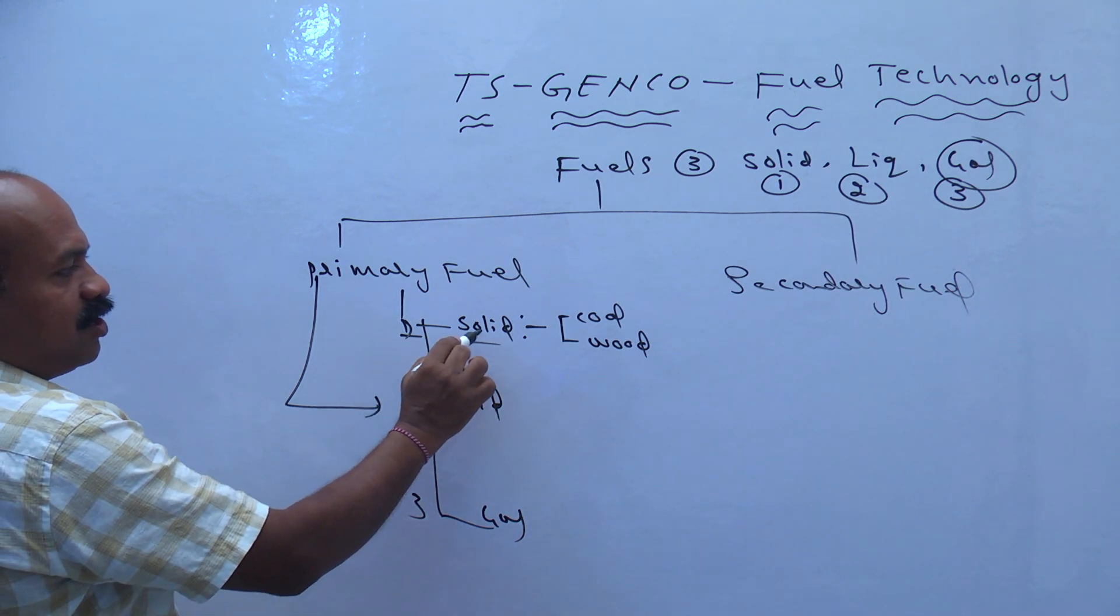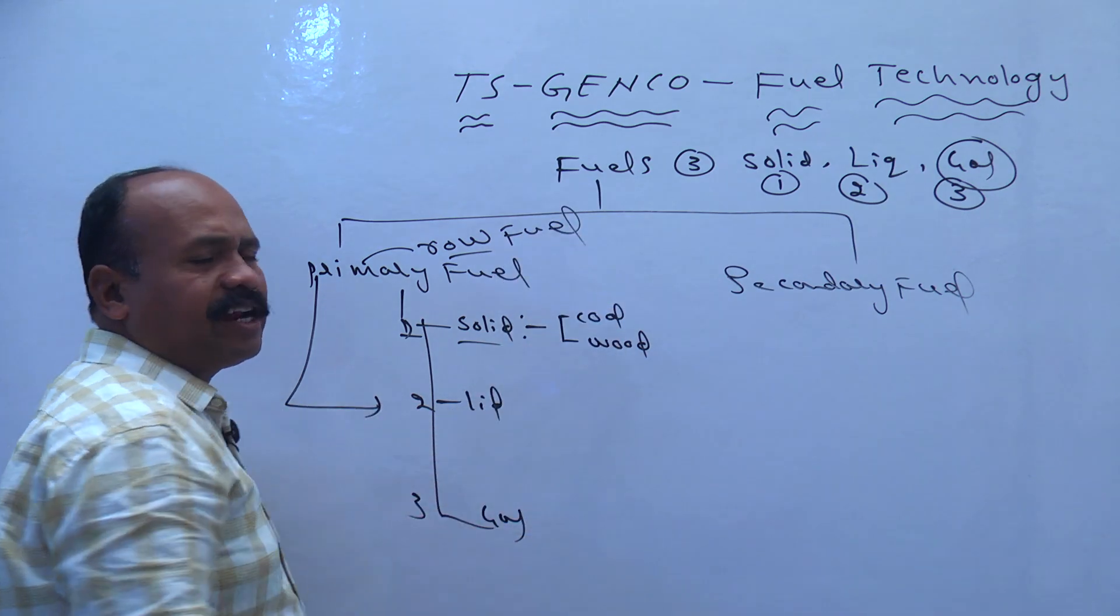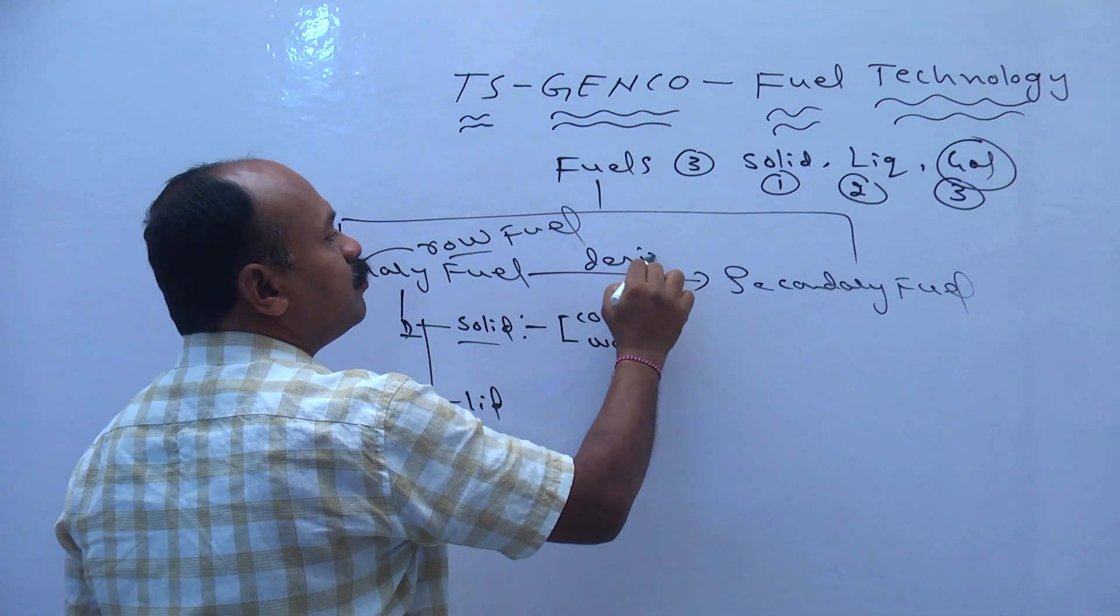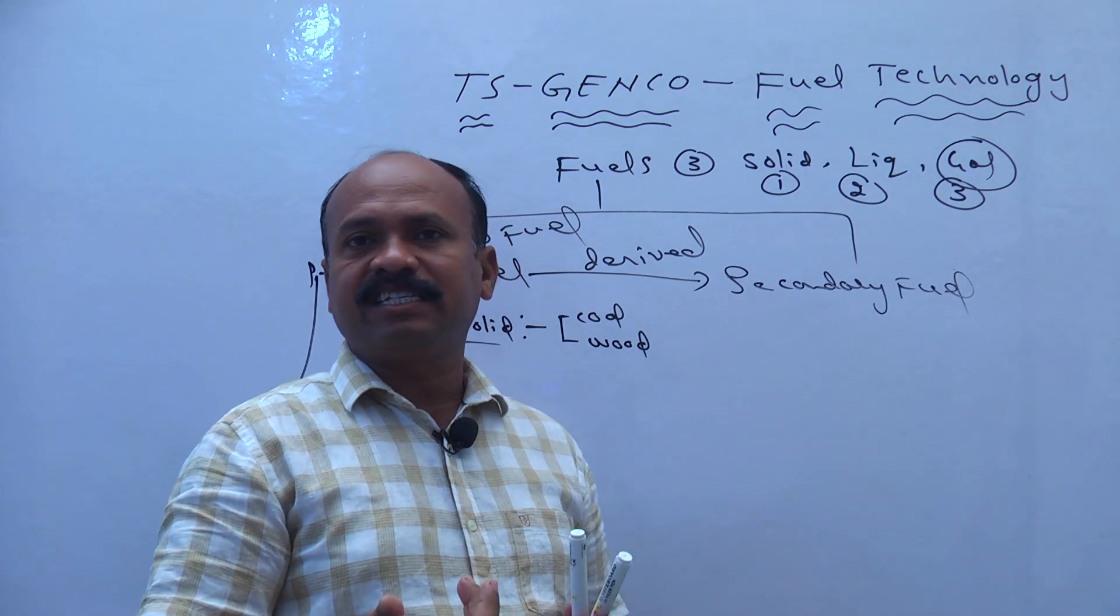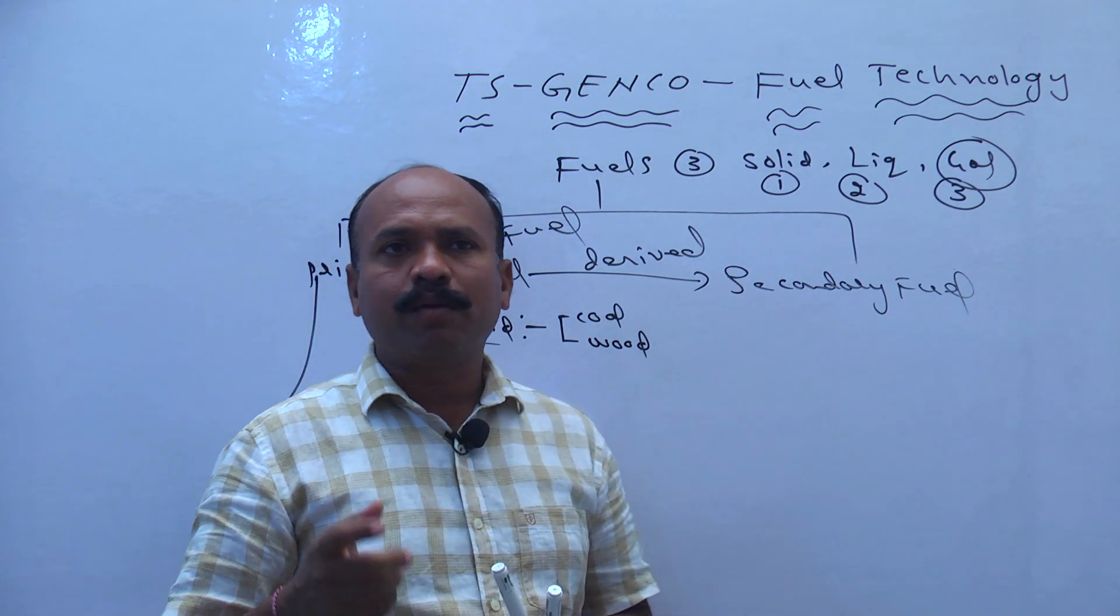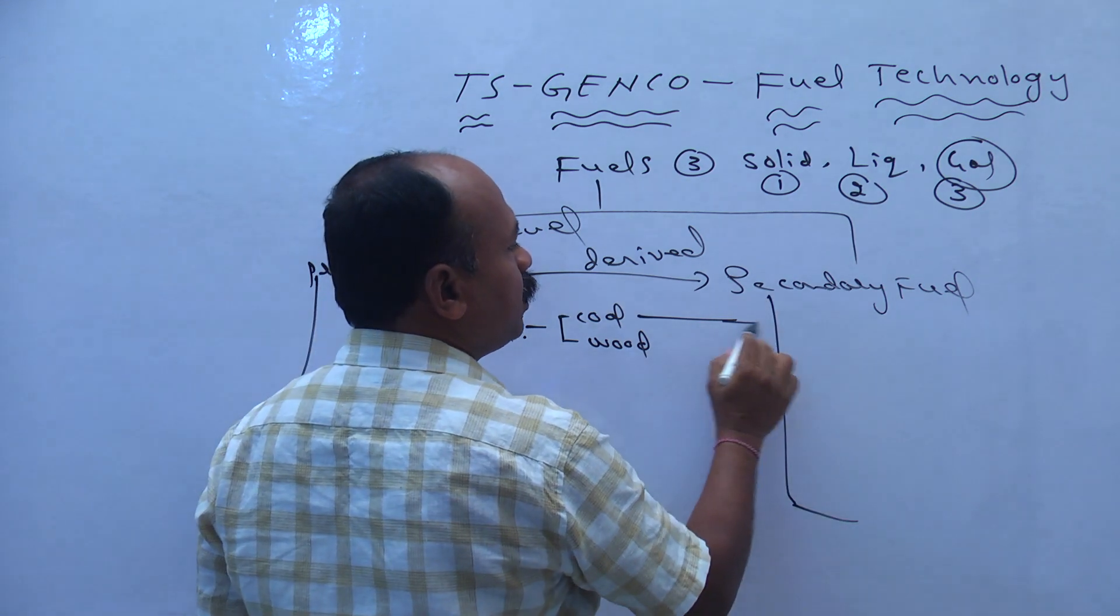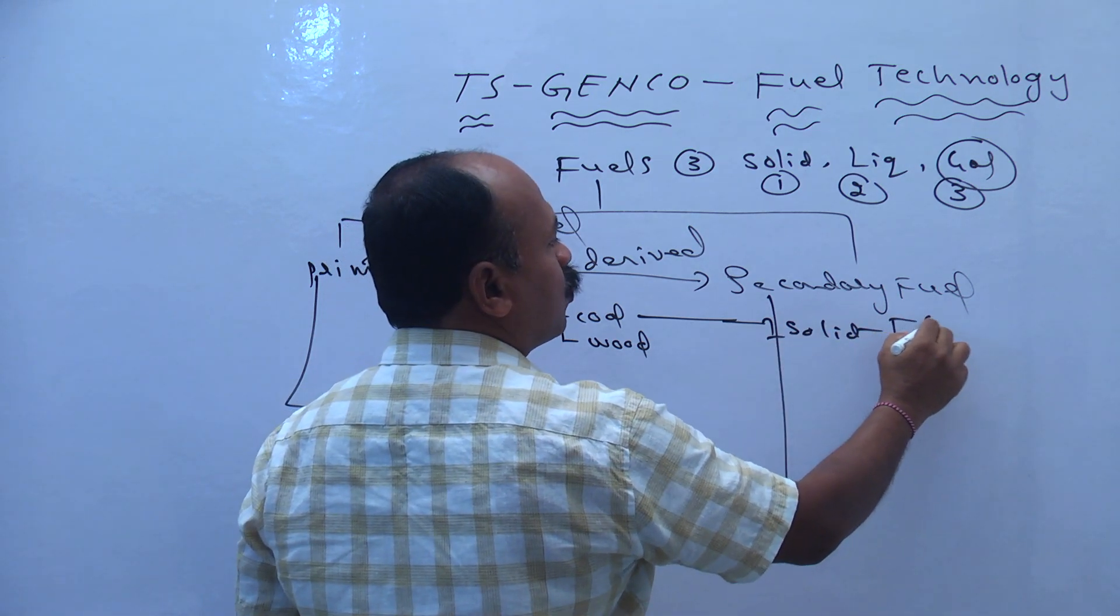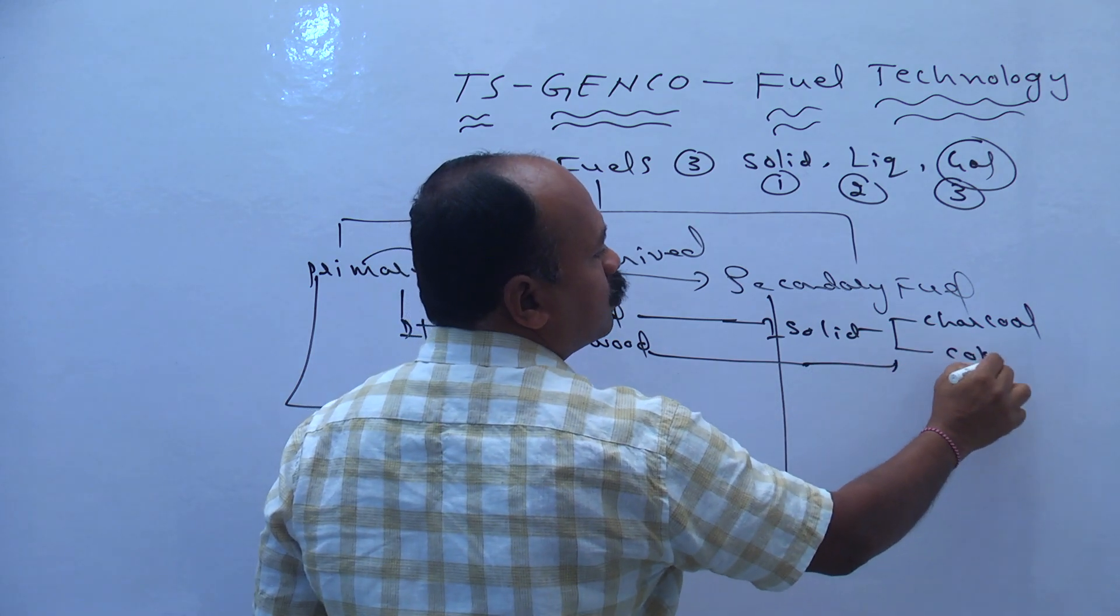The solid fuel is coal, the raw material. The primary fuel is raw fuel, direct. The primary is converted into secondary. The primary is converted, derived to secondary fuel. The fuel ranking is increased in the secondary fuel, derived from direct raw material.